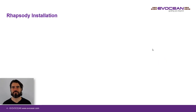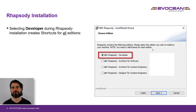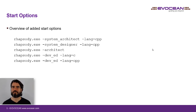First question: why do I have all this? All these shortcuts are created during the Rhapsody installation when Rhapsody Developer is selected. Here is an overview of all the start options that you get after the installation.